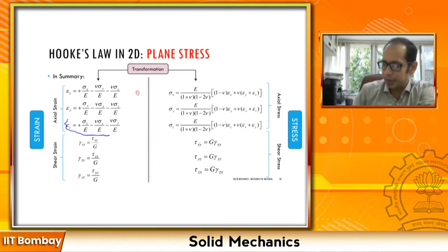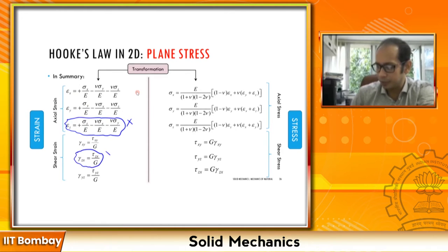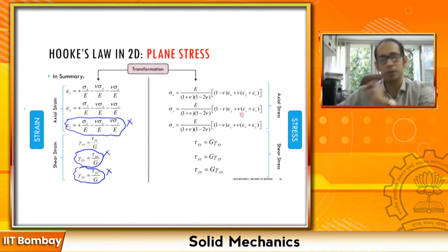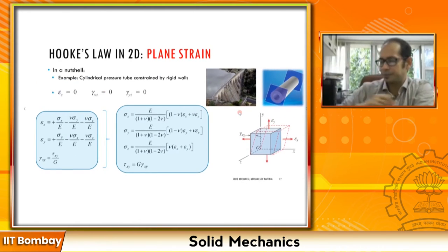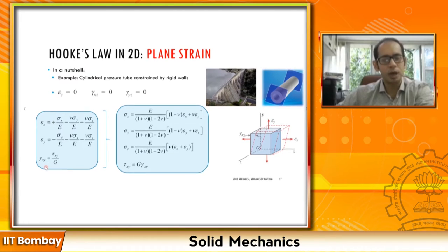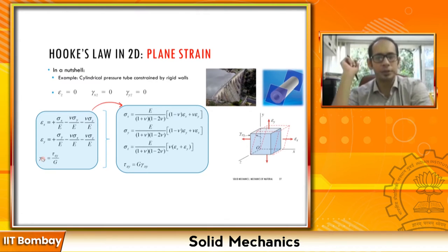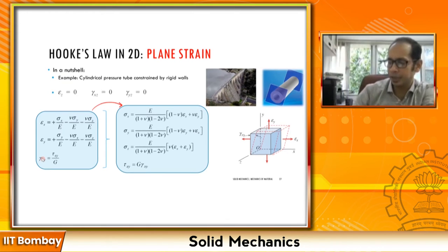Returning to the generalized form: since epsilon z is not allowed, that entire term vanishes, as do the gamma xz and gamma yz terms — those three equations are eliminated. We still have the remaining strain components. Stresses do not automatically vanish though, because they depend on the remaining strains. In the reduced equations, after substituting epsilon z, gamma xz, and gamma yz as zero, you get the same transformed set of plane strain equations.